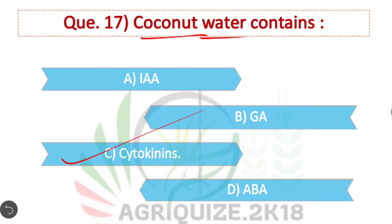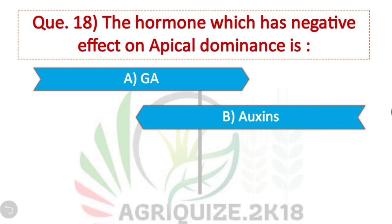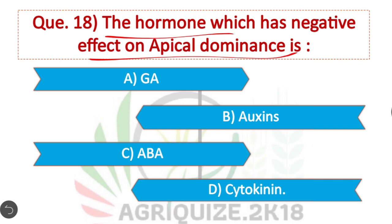Question 18: The hormone which has a negative effect on apical dominance — Option D is correct: Cytokinin. Cytokinin has a negative effect on apical dominance, and is therefore said to have the opposite effect of auxin.